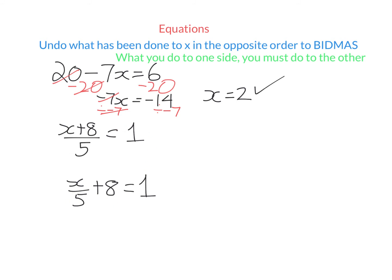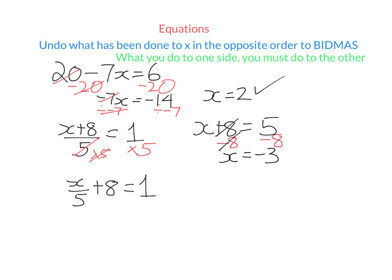Let's look at these two equations — they look very similar, but the only difference is the order of operations, and we're going to get a totally different answer. Here, what we've done to x is add 8 first, then divide by 5. Because dividing by 5 is the last thing done, it's the first thing I undo. Timesing by 5 and dividing by 5 undo each other, so I'm left with x plus 8 equals 5. Then I subtract 8 from both sides — plus 8 and minus 8 undo each other — leaving x equals minus 3. If I substitute x for minus 3, I get negative 3 plus 8 divided by 5 equals 1, which is a true statement.